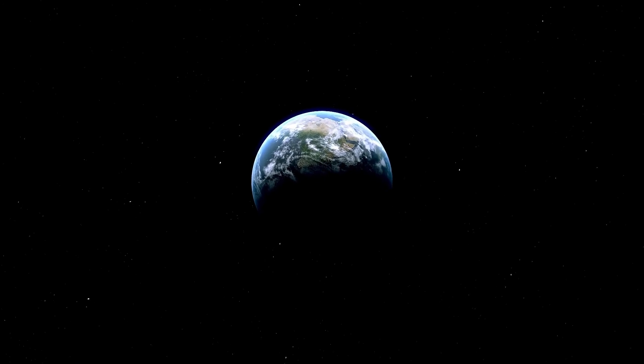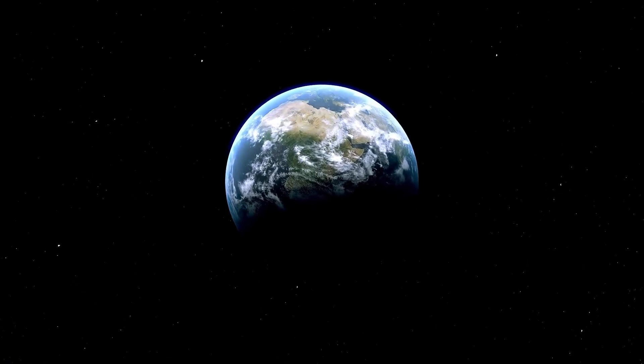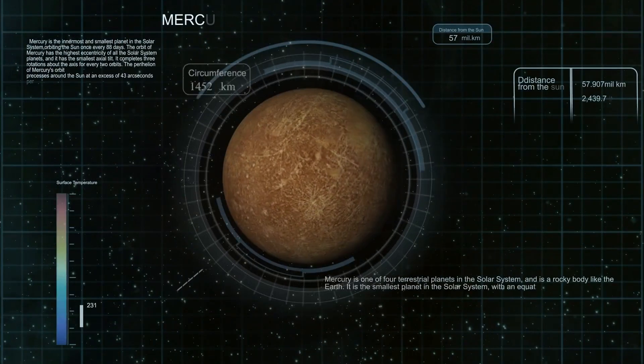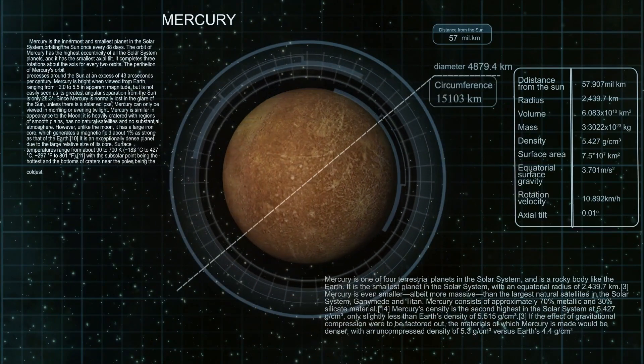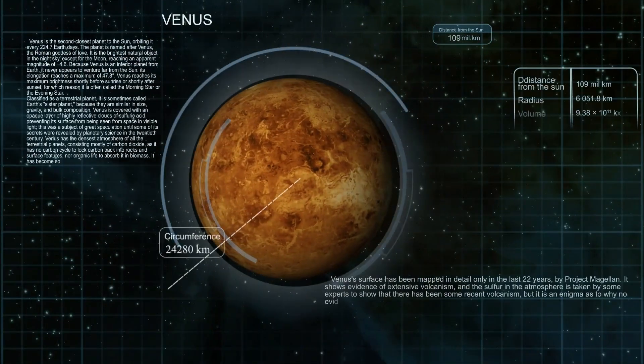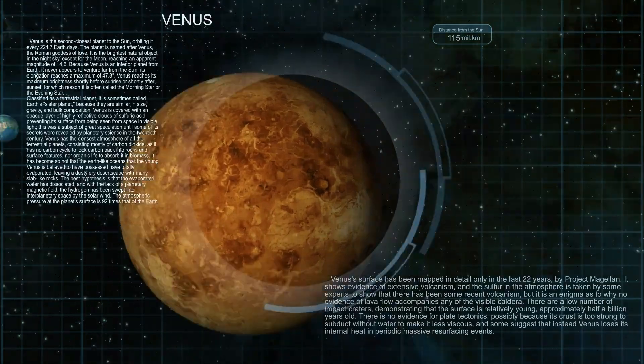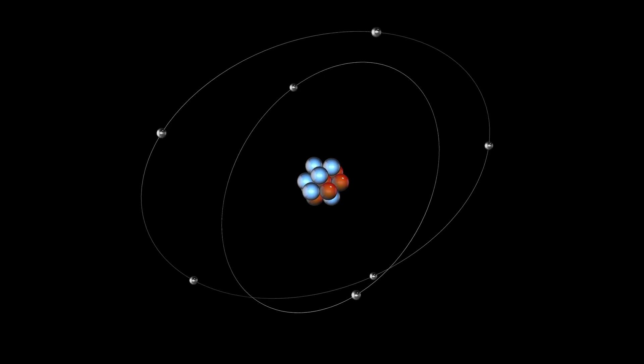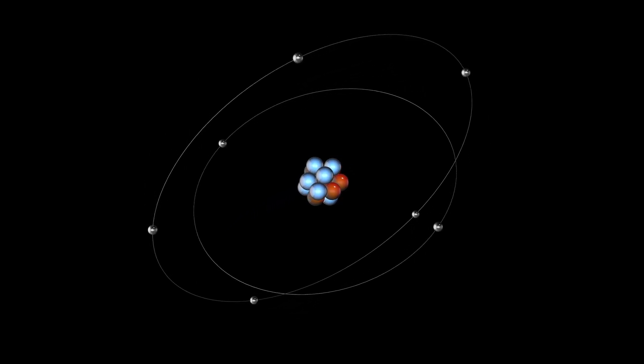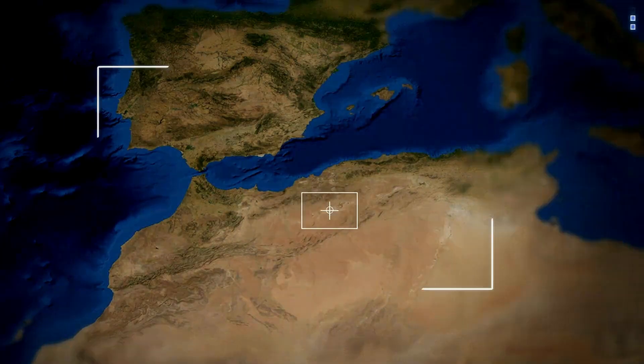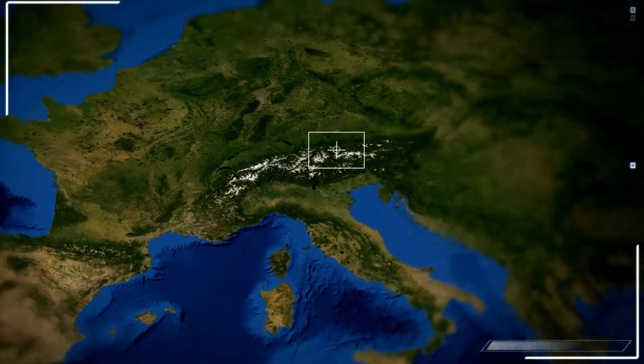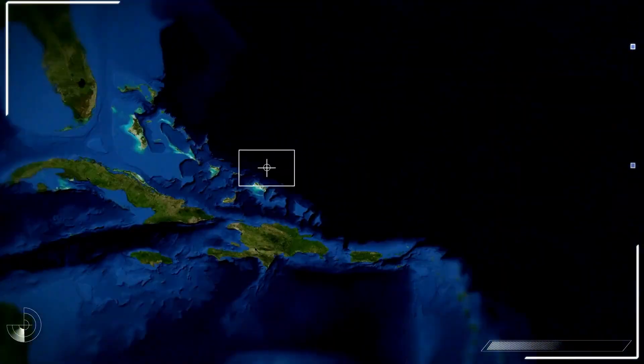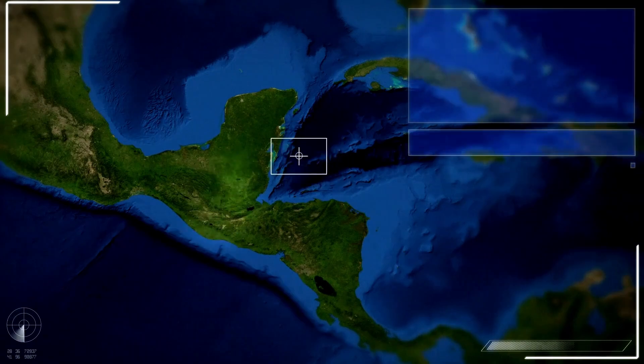Consider this: the closest known exoplanet to Earth, known as Proxima b, lies in the habitable zone of Proxima Centauri, a red dwarf star located approximately 4.25 light-years away. Although Proxima b orbits about 20 times closer to its star than Earth does to the Sun, it is believed to have a permanently lit day side and a perpetually dark night side, much like how the Moon always shows the same face to Earth.